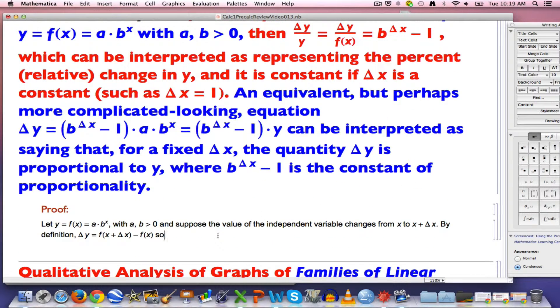Alright, let's prove it. We can do this pretty quickly. I've said I write proofs in sentences, you should write sentences with symbols, that's fine. F of X equals A times B to the X, and suppose the value of the independent variable changes from a value of X to X plus delta X. So it changes by delta X.